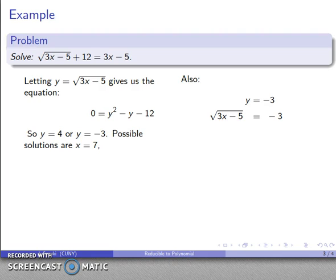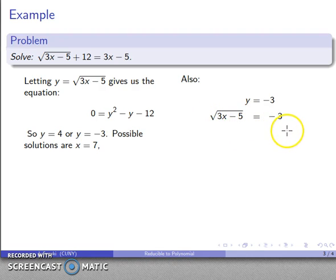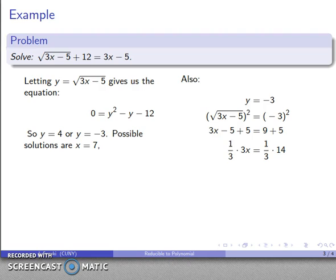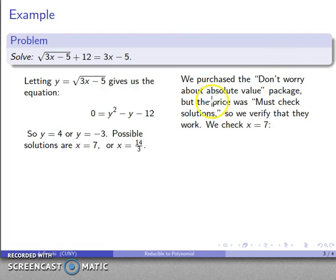I'm going to note that square root equals a negative number here. I know that the square root is defined as the positive number whose square is the value inside, so this should not give me a real solution. But I'll ignore that fact and blindly rush ahead with the algebra. I'll square both sides, add 5, and get the possible solution x equals 14 over 3. I did purchase the 'don't worry about absolute value' package, but the price is that I must check my solutions — which we should always do anyway.